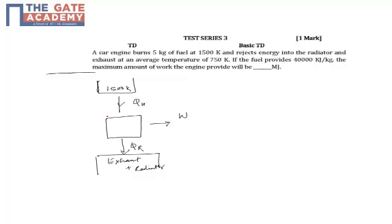if the fuel provides 40,000 KJ per kg. So that is 1 kg of fuel, you get 40,000 KJ per kg. How much is the amount of heat that we get, QH? We know the mass of the burnt fuel into the calorific value. The calorific value is what we get per kg of fuel.